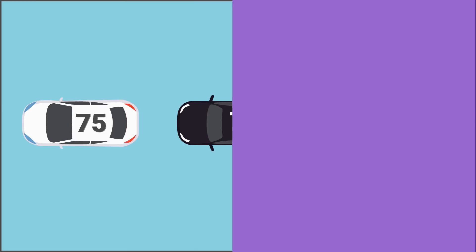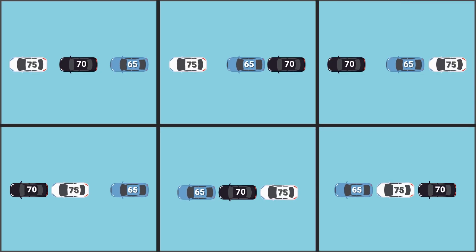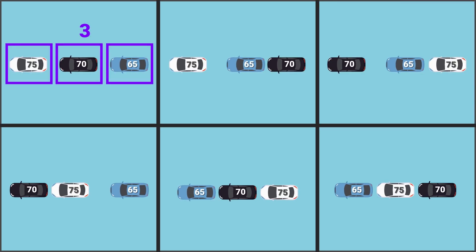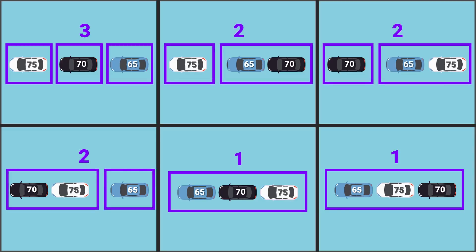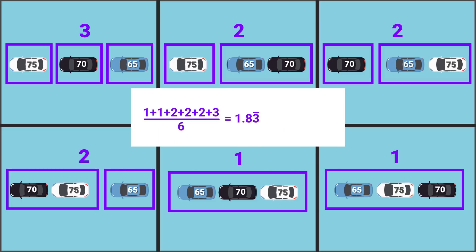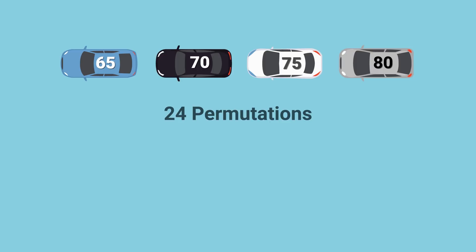If instead we have three cars in total, there are six total permutations. In the ideal case there are three groups. If the slowest car is in front, regardless of the other two, we will guaranteed have one group. In all other scenarios we'll have two groups. The average of these numbers is 1.83 repeating, or 1 plus a half plus a third. Now with four cars there are 24 permutations. If we find the number of bunches for all those permutations and average them, we'd get 2.083 repeating — the first four numbers of the harmonic series.